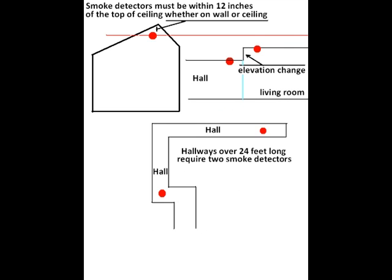Here's some further clarification on smoke detectors. On the top diagram, you see that smoke detector is in a pitched roof or ceiling. That smoke detector has to be within 12 inches of the apex of the ceiling, whether it's on the wall or on the ceiling. It has to be within 12 inches height of the very top of that ceiling.